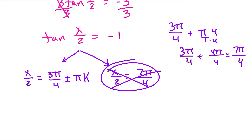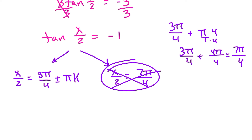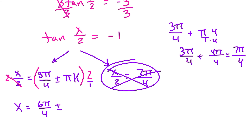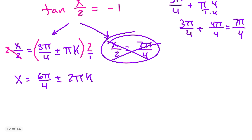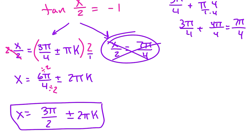All we're left with is this one: we now have x/2, so to cancel out the 2 we multiply by 2. That cancels on the left, which means we multiply everything on the right by 2. So x equals 2 times 3π/4, which is 6π/4, plus or minus 2 times πk, giving us 2πk. We can then simplify: 6π/4 becomes 3π/2. So our answer is x equals 3π/2 plus or minus 2πk.